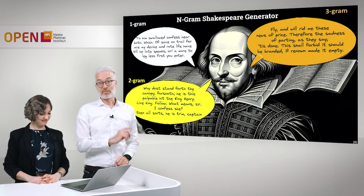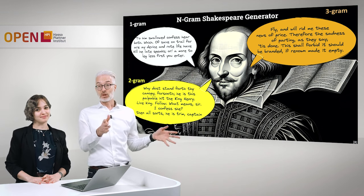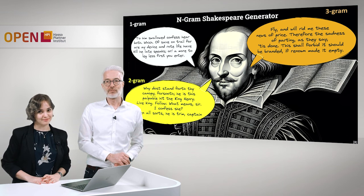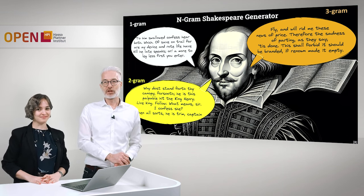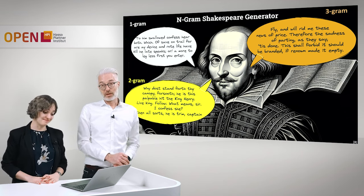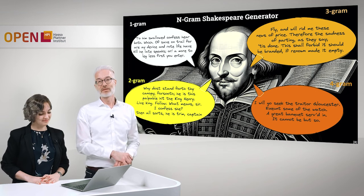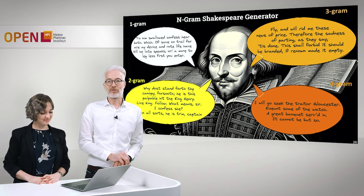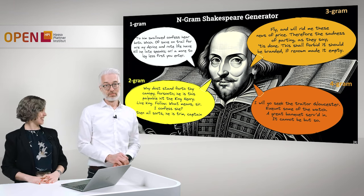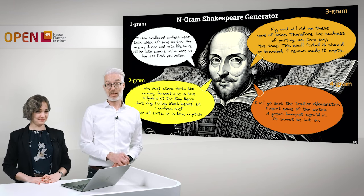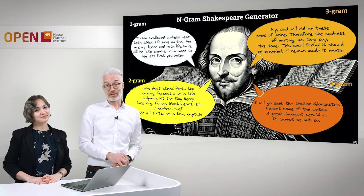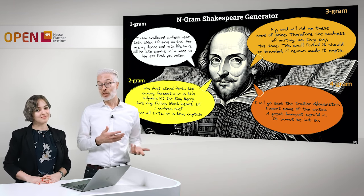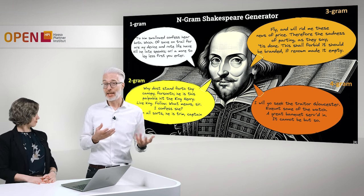Continuing with three-grams — taking two words and seeing what comes next — we get: 'fly, and will rid me these news of price, therefore the sadness of parting, as they say, tis done, this shall forbid, it should be.' Sounds even better, still doesn't make sense. But the magic happens at four-grams: 'I will go seek the traitor Gloucester... A great banquet served in, it cannot be but so.' That probably sounds plausible — this is almost Shakespeare. Statistically it is Shakespeare, since we're looking at four-grams. But there is no intelligence involved. This is distributional semantics, and nowadays it goes way further and way beyond that.